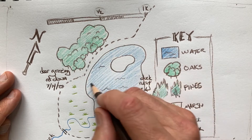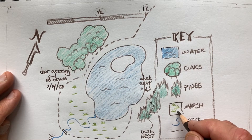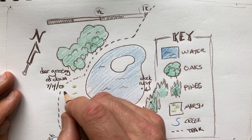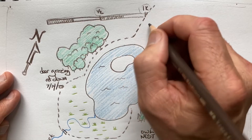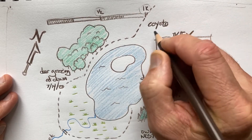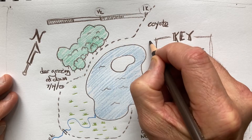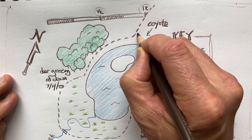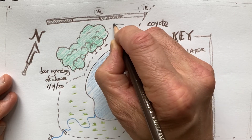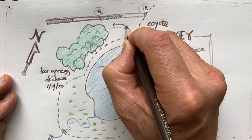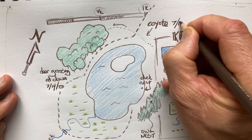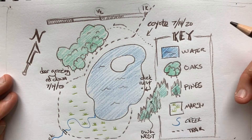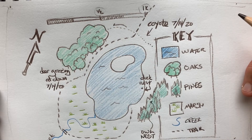So we have a key, a scale, and we're using symbols to show what we have. Non-moving features are very useful to put in the key, and if you find little features that will change over time — where the deer go, where you saw the coyote walking across here into the oaks, coyote seen on the same day — you can include a lot of information on a very quick little map.